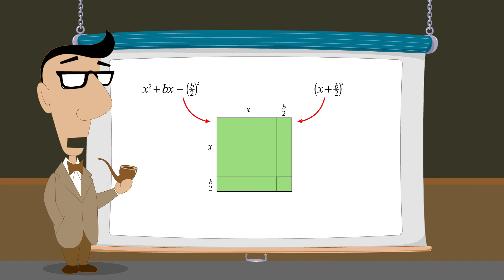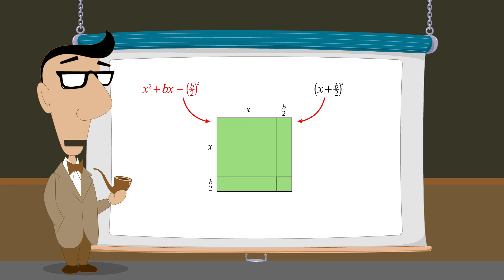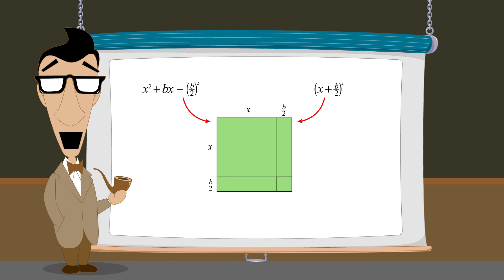We have shown geometrically that any quadratic expression of the form x-squared plus bx plus b over 2-squared is a perfect square. In the next lecture we will show what happens to this geometric proof when the bx term is negative.